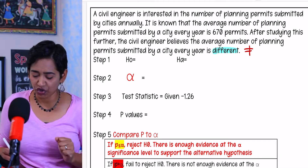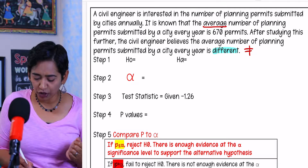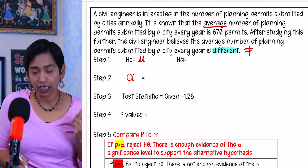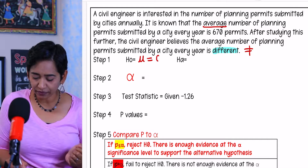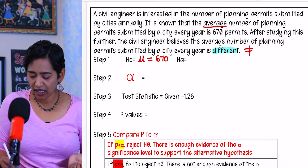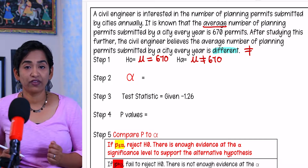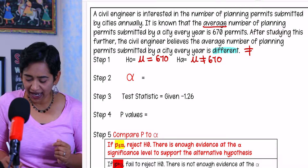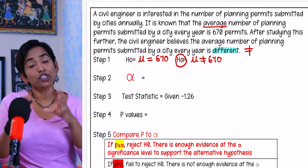So let's go ahead and write our H0. You always start with your H0. They're talking about average, so you start with mu. Your H0 is always equal to your number: 670. Your HA is mu not equal to 670, because it's different.